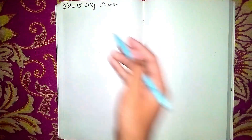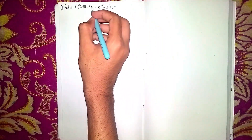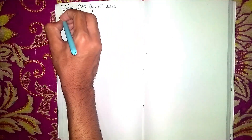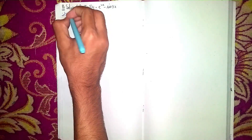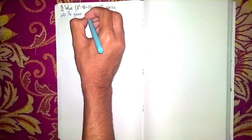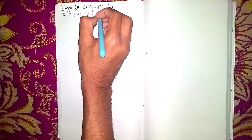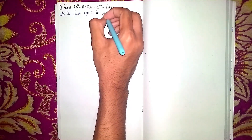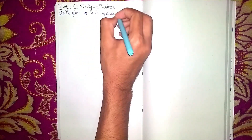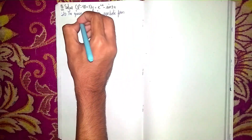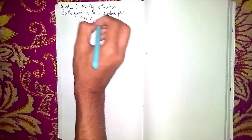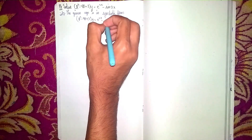Hello everyone and welcome back to my channel. Today's question is: solve (D² - 4D + 3)y = e^(2x) - sin(3x). This is a non-homogeneous linear differential equation. First, write the given equation in symbolic form — here D represents the symbolic differential operator. The given equation is D² - 4D + 3 into y is equal to e^(2x) - sin(3x).